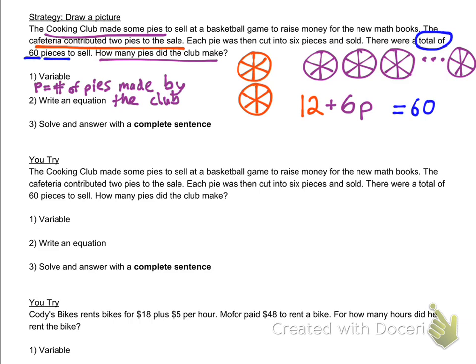So I'm going to add six times the number of pies: 6P. Six slices for each pie, and P is the number of pies, so 6P is how many slices there are in all of these. Now we've got our equation and we can just solve. Subtract 12 from both sides, 6P equals 48, divide by six, and P is eight. That means the cooking club made eight pies.